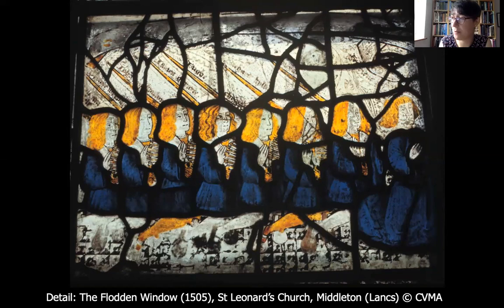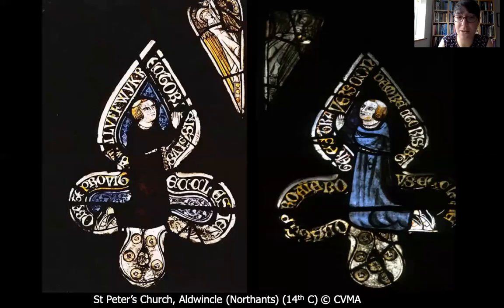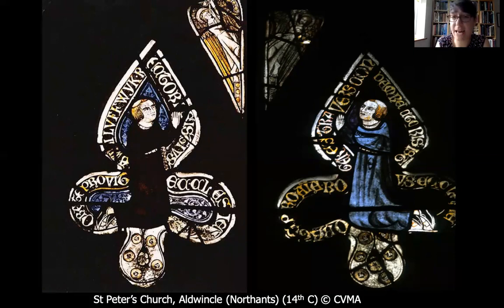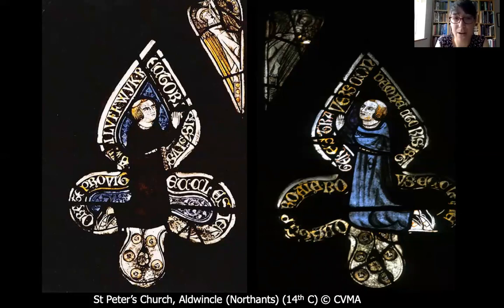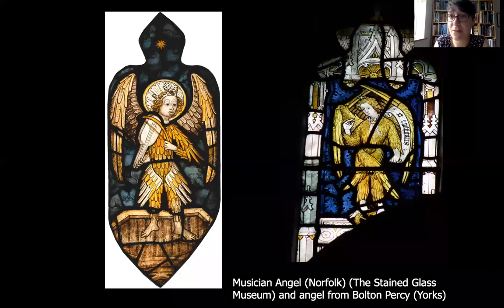Sometimes donors were individuals too. We have two examples here of rectors of Old Winkle Church in Northamptonshire - both had given funds towards the building, and they're shown in the tracery lights as donor figures with their names around them, so we know who they are: Roger Travers and William de Luffwick. It's quite unusual for donors to be shown in the tracery lights - the very high parts of a window - as those parts were normally reserved for the company of heaven.